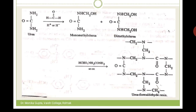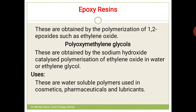The third resin is epoxy resins. Epoxy resins are obtained by polymerization of 1,2-epoxides. The simplest epoxide is ethylene oxide. Polymerization of ethylene oxide gives polyoxyethylene glycol, which is an example of an epoxy resin.